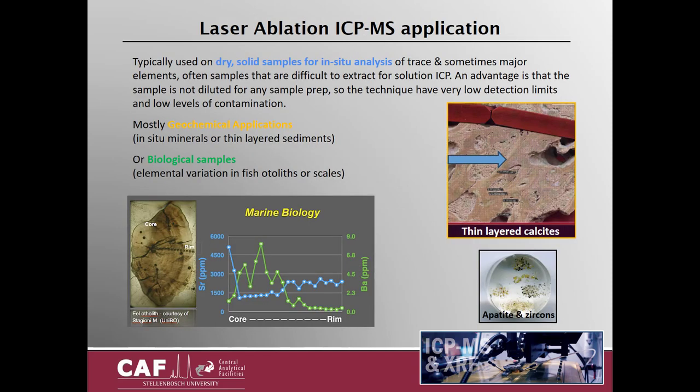Laser ablation ICP-MS is typically used on dry solid samples for in-situ analysis of trace and sometimes major elements, often on samples that are difficult to extract for solution ICP. An advantage is that the sample is not diluted for any sample prep, so the technique has very low detection limits and also low levels of contamination. Analysis is mostly done on geochemical samples such as minerals or sediments, but also on biological material such as bone, teeth, or fish otoliths. Analysis is typically done at spot sizes from 10 to 100 microns, but continuous line scans at the same diameter can also be applied.